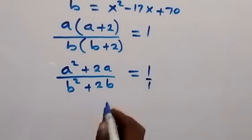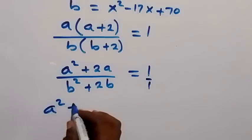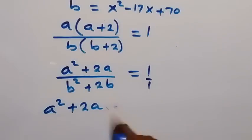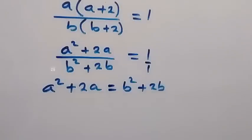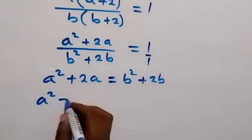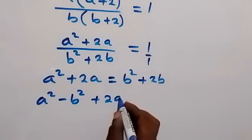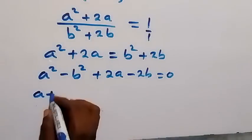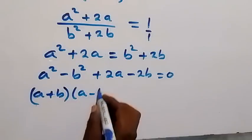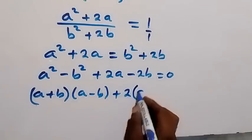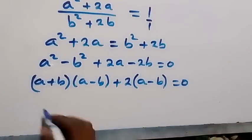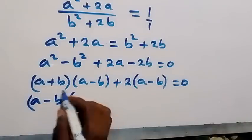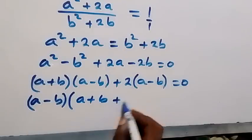We cross-multiply to get a squared plus 2a equals b squared plus 2b. Rearranging everything to one side gives a squared minus b squared plus 2a minus 2b equals 0. Using the difference of two squares, this becomes (a plus b)(a minus b) plus 2(a minus b) equals 0. Factoring out (a minus b) gives (a minus b)(a plus b plus 2) equals 0.